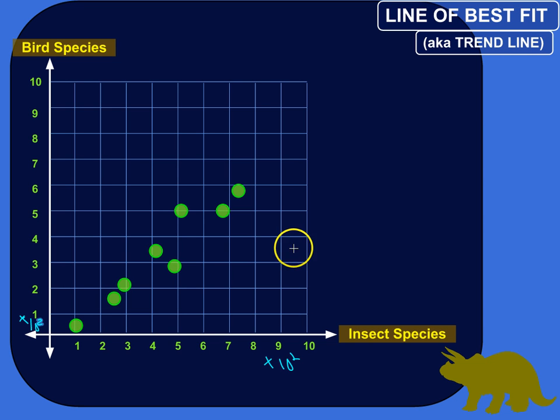So what I do is I go to these different islands and I count up how many different insect species I can find and I count up how many bird species I find and I plot these observations that I make on a coordinate plane like this.